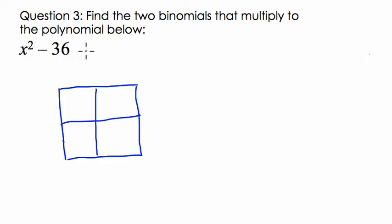So I know that I'm trying to find two binomials that multiply to this binomial here. So what are they? Well, we need to have x squared and minus 36, so I put those into my square here. So now, how do I get x squared?